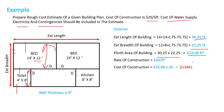The rate of construction in our area is $20 per square feet. So the total cost of construction will be equal to total plant area multiplied by unit rate, giving us a total of $13,461. This is the cost of construction.